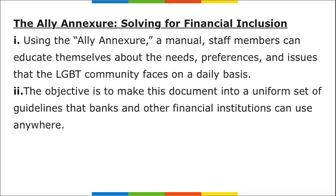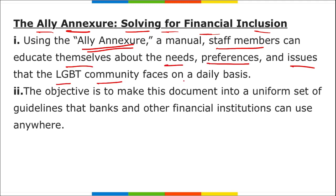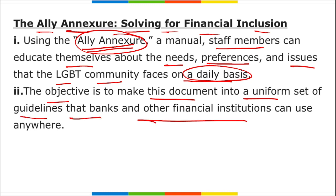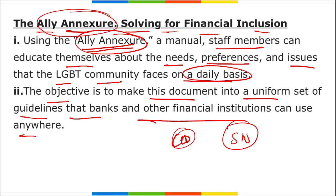Ally Annexure is sponsored by Federal Bank, a Kochi, Kerala-based banking partner of Fi Money. Staff members can use this annexure to educate themselves about LGBTQ needs, preferences, and issues. The objective is to create a uniform set of guidelines that banks and financial institutions can use anytime. The CEO of Fi Money is Sujith Narayanji.